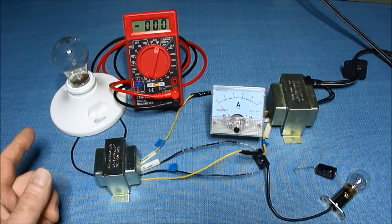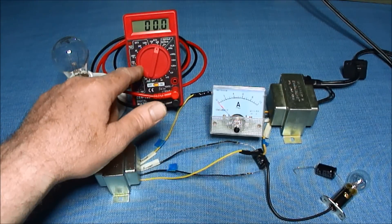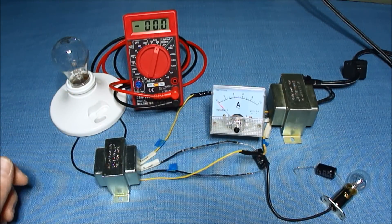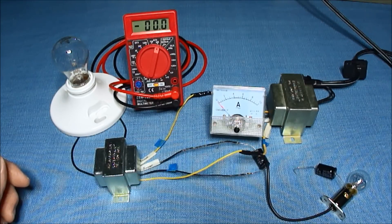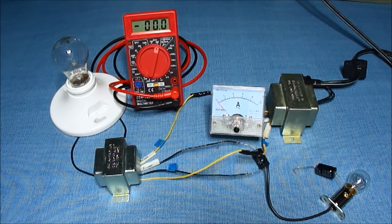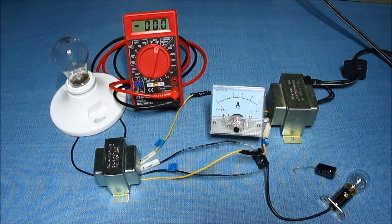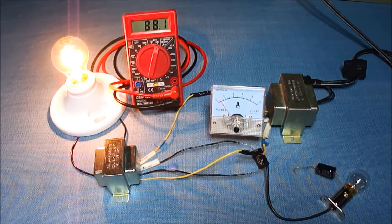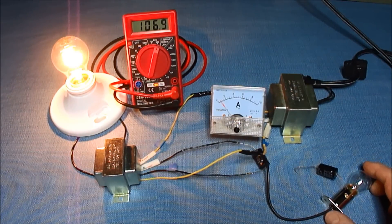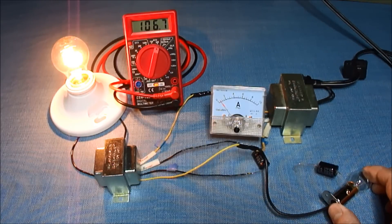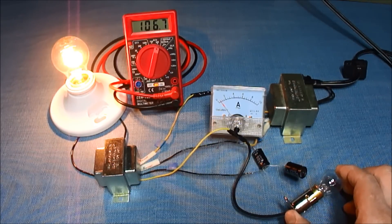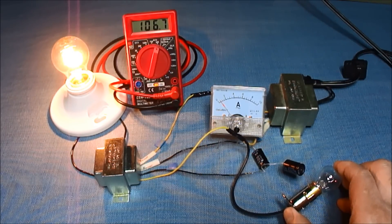I have the voltmeter here so we can see what's going through the light bulb. Light bulb is about 120 volt 15 watt. You've got almost 107 volts at the light bulb. I'm going to touch this and start the oscillation.